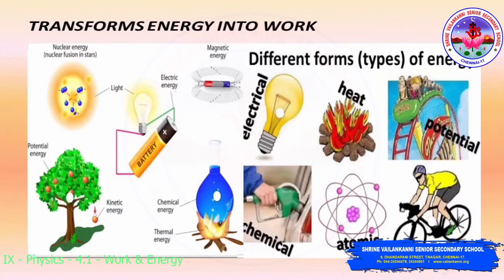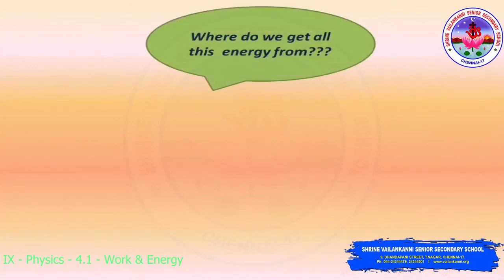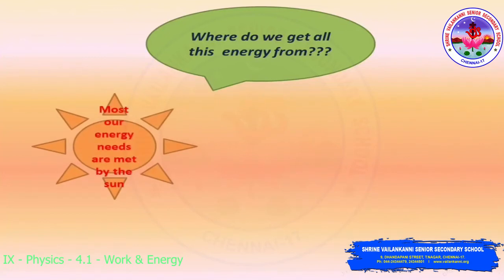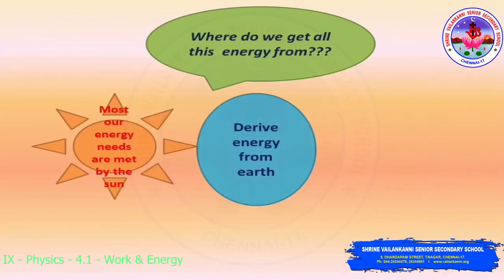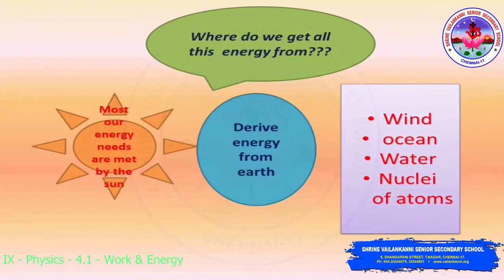All those things are different forms of energy. Where do we get all this energy from? Most of our energy needs are met by the sun. We also derive energy from the earth — that is geothermal energy. From wind, that is wind energy. Tides in the ocean, that is ocean energy. From water, that is hydro energy. And biomass, that is bio energy. Like this, we have different forms of energy from different energy resources.